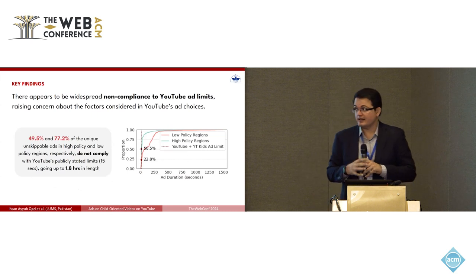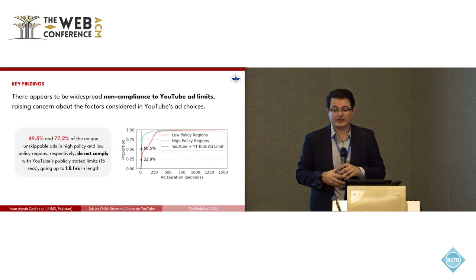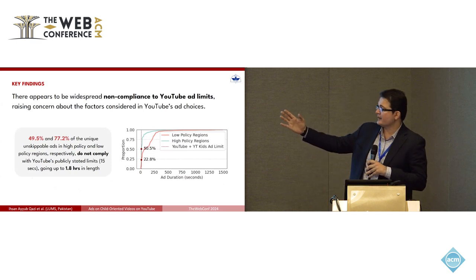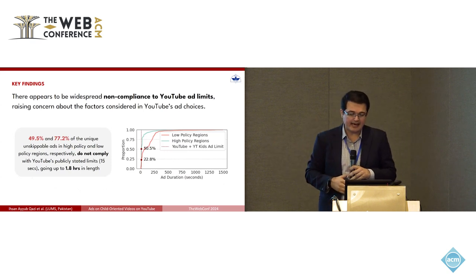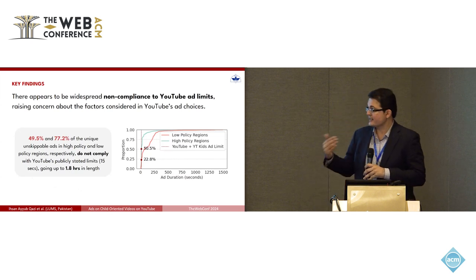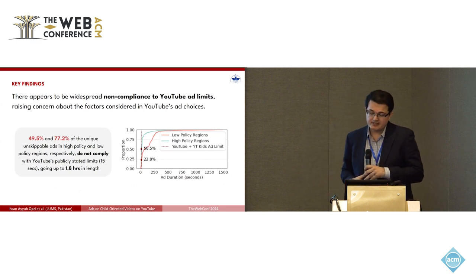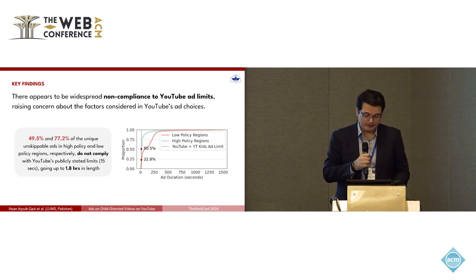There also appears to be widespread non-compliance with YouTube's own ad limits, raising concerns about the factors considered in YouTube's ad choices. The CDF on the slide shows ad duration in seconds on the x-axis, with a vertical line indicating YouTube's stated ad limit. In low-policy regions, a large fraction of ads do not meet YouTube's guidelines — specifically, 49.5% and 77.2% of unique unskippable ads in high-policy and low-policy regions respectively do not comply.